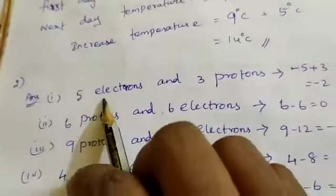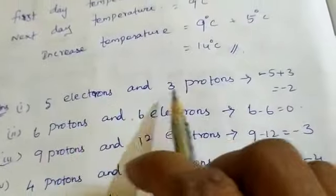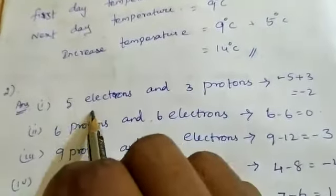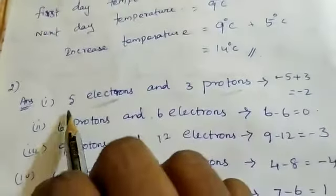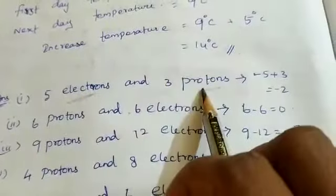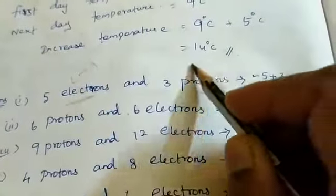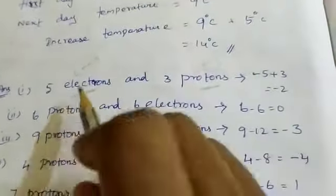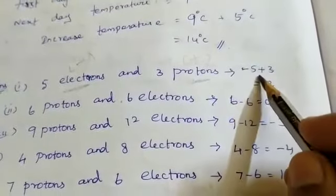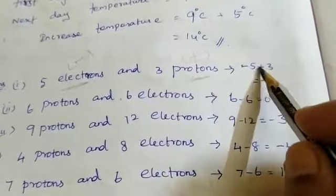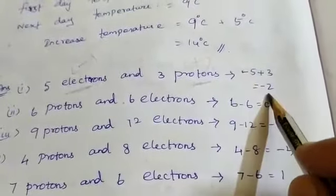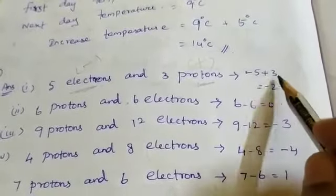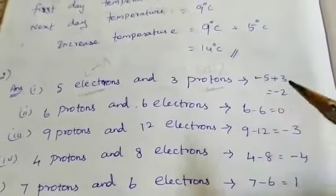First: 5 electrons and 3 protons. Electrons means minus charge, protons means plus charge. So minus 5 plus 3. We take the bigger number's symbol — minus — and subtract: minus 5 plus 3 equals minus 2.